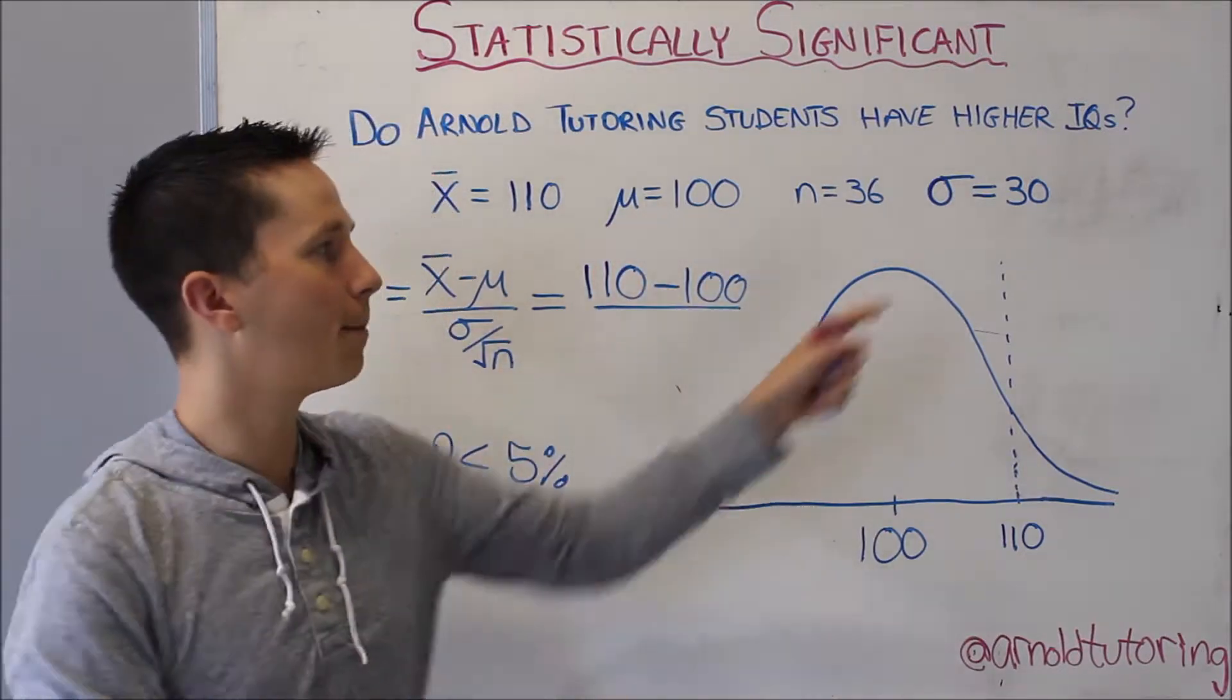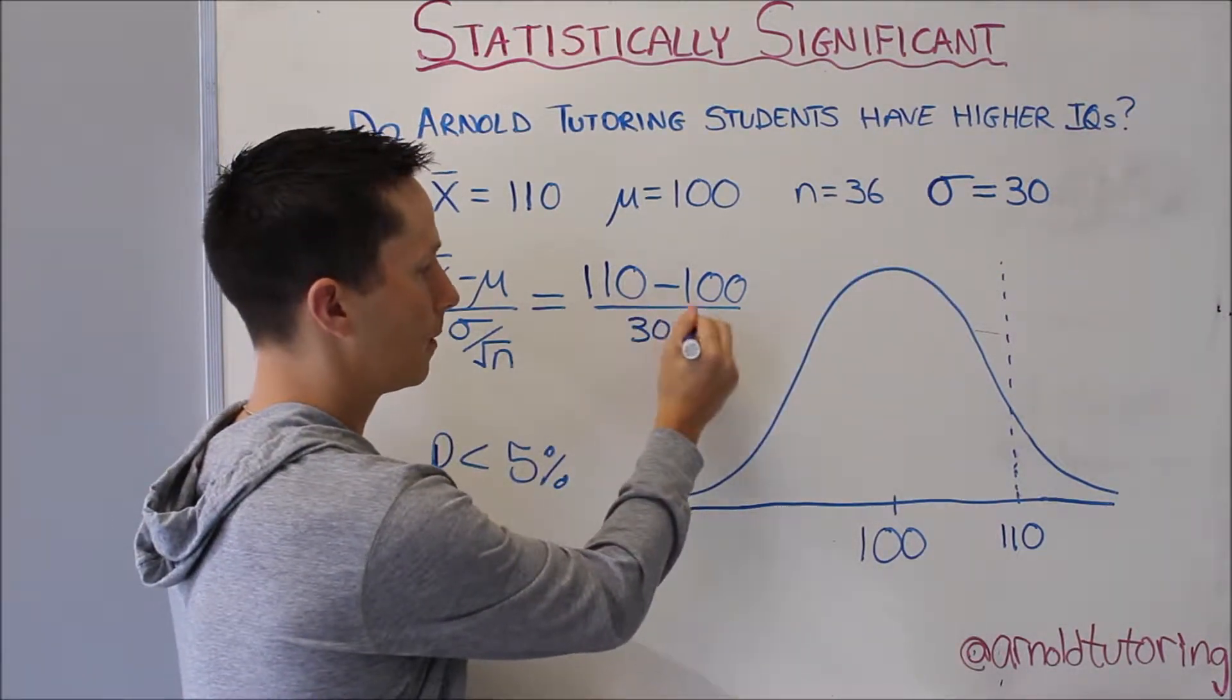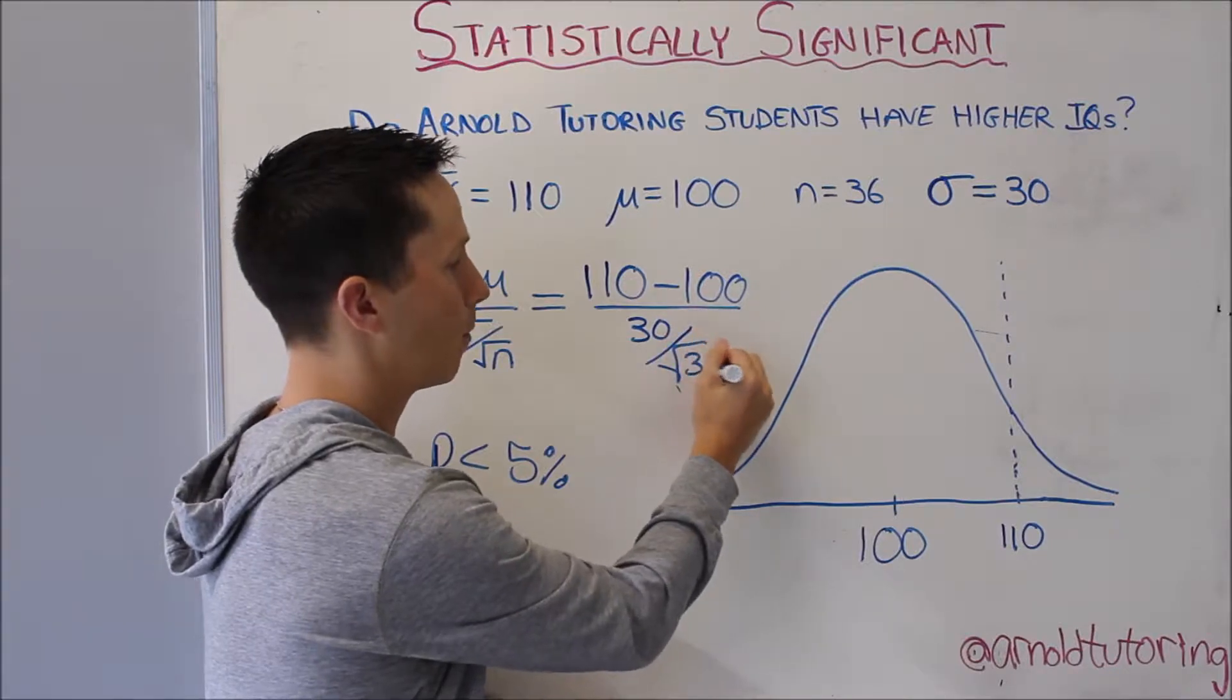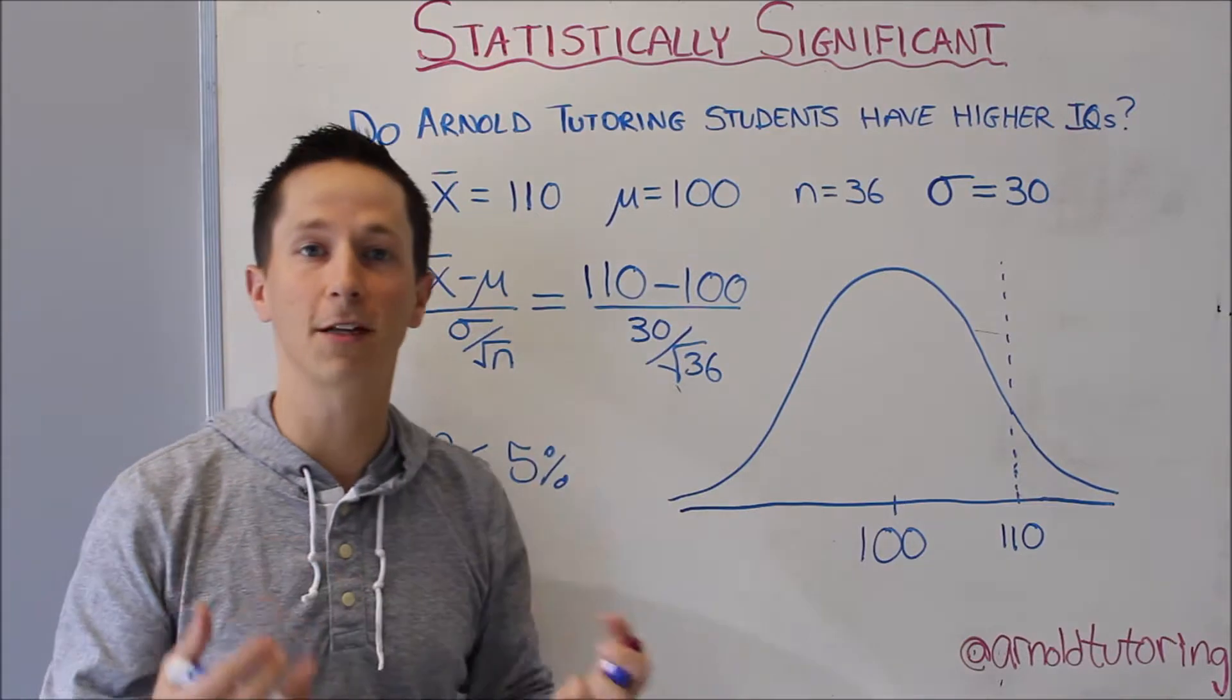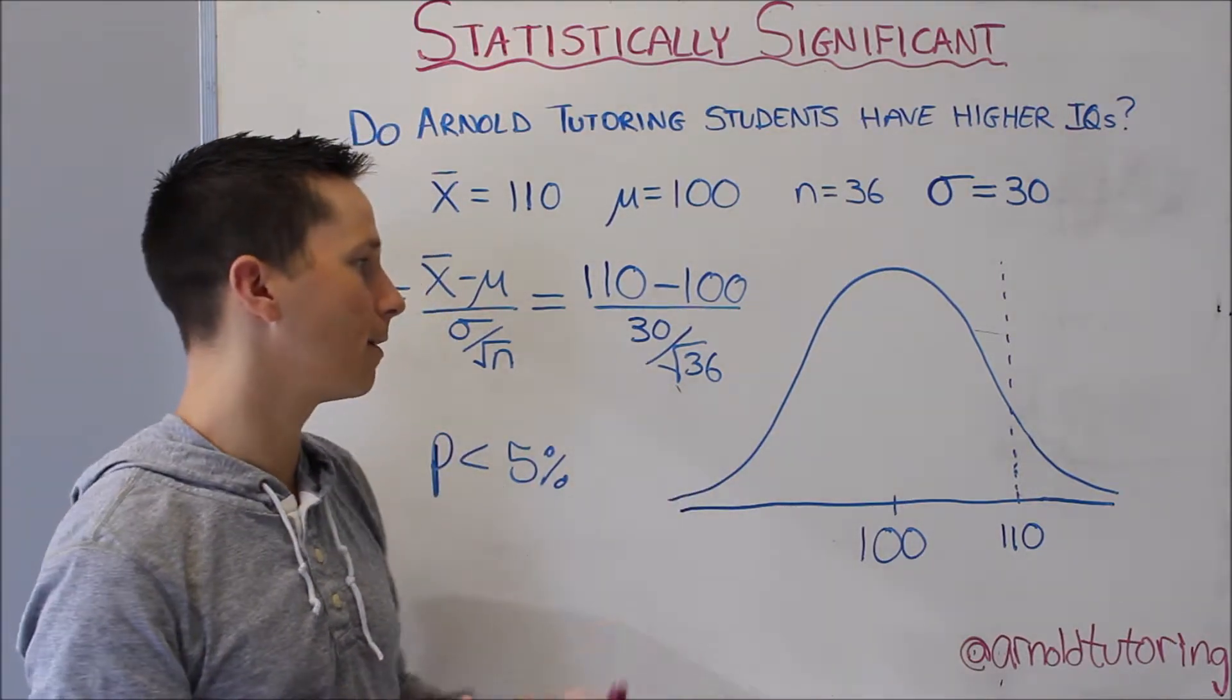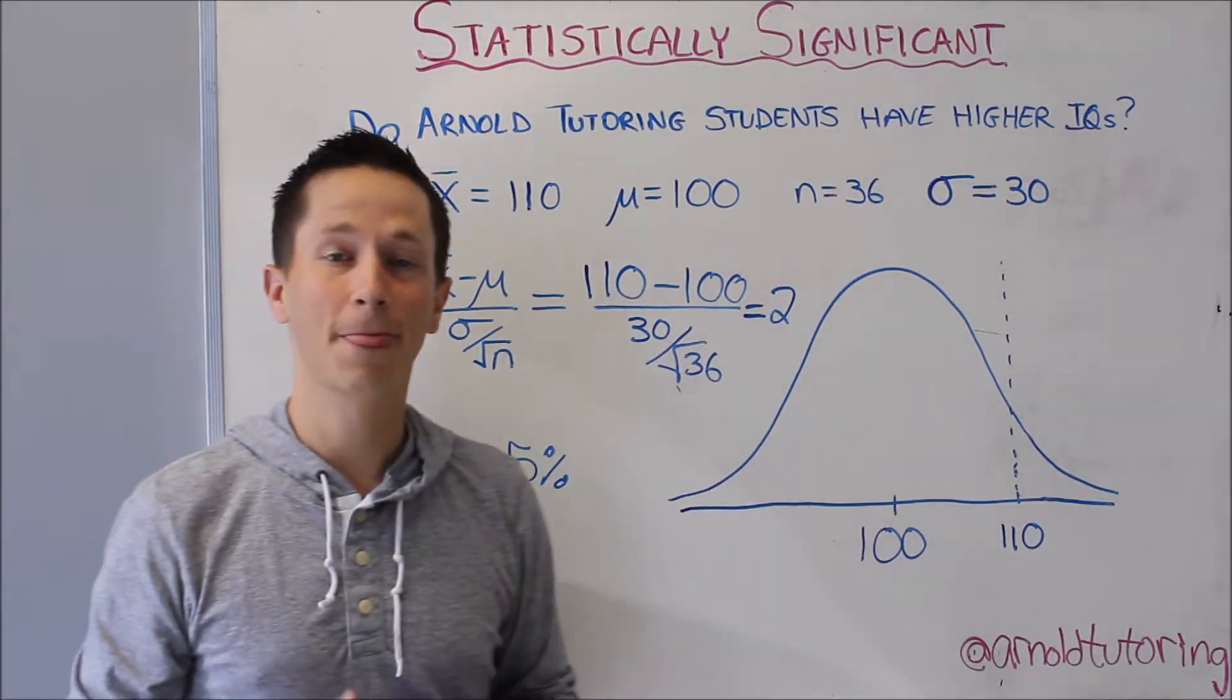Then we're going to divide by the standard deviation over the square root of the number of people, because the more people we survey, the more significant a difference in the means will be, and that's why we put that in the denominator. This equals 2. What do we do with that value?